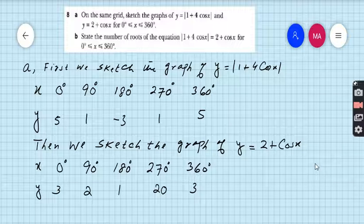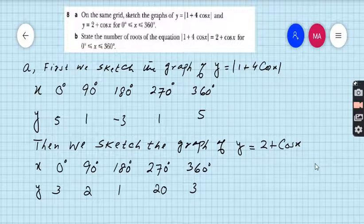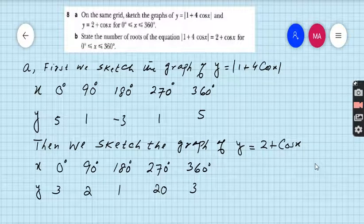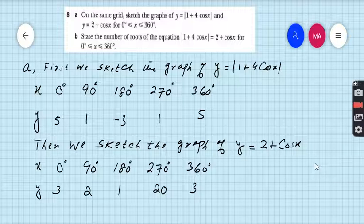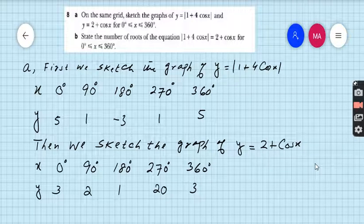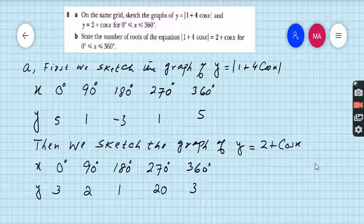Then you have to make the table of y equals the second equation, that is y equals 2 plus cos x. Again I am taking the interval 90 degrees because the period of cos x is 360 degrees. But if you want to take another interval, no matter, you will get the same answer. Take your calculator, write down 2 plus cos 0, you will get 3. Then 2 plus cos 90, you will get 2. Then 2 plus cos 180, you will get 1, and so on. Similarly, write 2 plus cos 360, you will get 3.